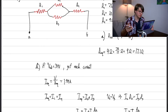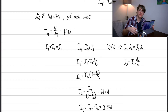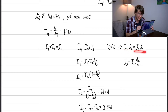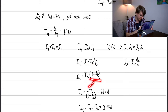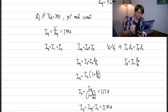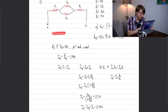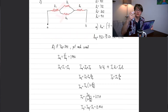We apply Kirchhoff's junction rule: the incoming current equals the two branch currents added together. Since the two parallel resistors have the same voltage, we write V = IR for each and get a relationship between the two currents. Substituting in, we solve to find I2 = 1.17 amps, then use the junction equation with that known value to get I3 = 0.82 amps.